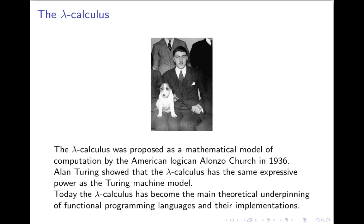In this last part of the podcast, we'll have a look at the lambda calculus, because the lambda calculus is central to the understanding of functional programming. The lambda calculus is actually a model of computation that was proposed by the American logician and mathematician Alonzo Church back in 1936. And that same year, Alan Turing showed that the lambda calculus has the same expressive power as the Turing machine model. Today, the lambda calculus is important because it's the main theoretical underpinning of functional programming languages and their implementations.